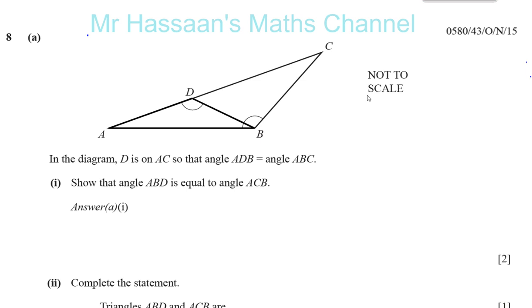This is a question about similarity. We're told in the diagram that D is on AC such that angle ADB is the same as angle ABC. Show that angle ABD, this angle here, is equal to angle ACB, which is this angle over here. You're going to show that these two angles are the same.